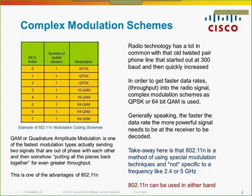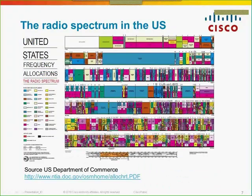Now that we've covered modulation and what a radio wave is — how do we end up on the frequencies we're on? This is a chart of the radio spectrum in the U.S. from the Department of Commerce. It's the entire radio spectrum mapped out. It's unreadable at this scale, so let's look at the Wi-Fi part of it.